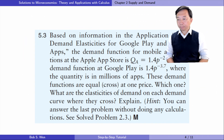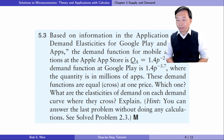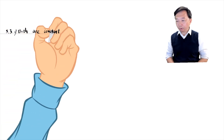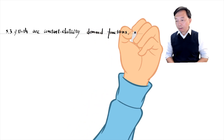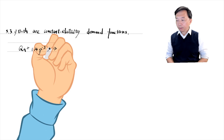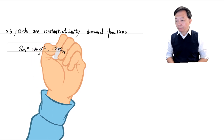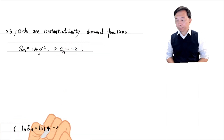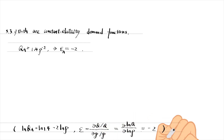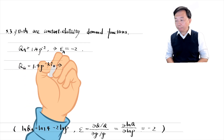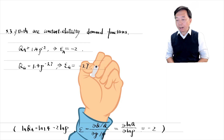Let's solve exercise 5.3. We have the demand function for mobile applications at the Apple App Store and the demand function at Google Play. These demand functions are equal at one price — which one? What are the elasticities of demand on each demand curve where they cross? We see that the demand functions are constant elasticity demand functions. The elasticity is the same at every point along the demand function. It is the power of the exponential form. The price elasticity of demand for Apple Apps is minus 2 and that for Google Apps is minus 3.7.